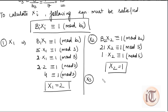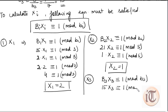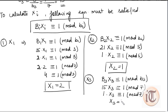For x3: B3·x3 ≡ 1 (mod b3), which gives 15·x3 ≡ 1 (mod 7). Dividing 15 by 7 gives remainder 1, so 1·x3 ≡ 1 (mod 7). Substituting x3=1: 1 divided by 7 gives remainder 1. So x3 = 1.